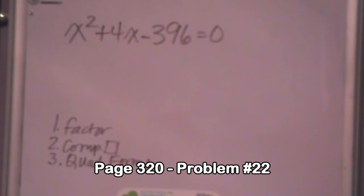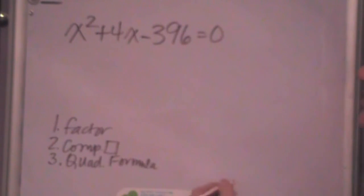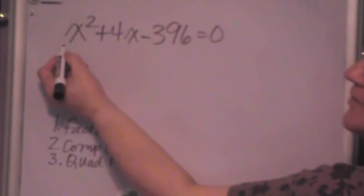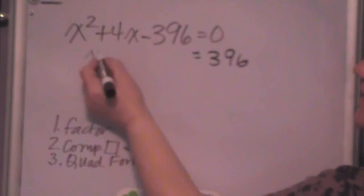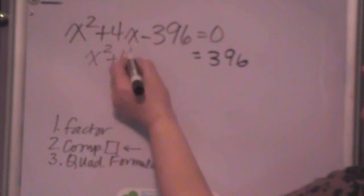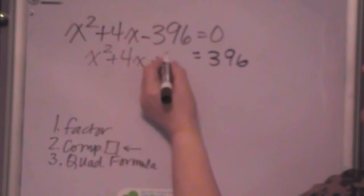On this quadratic, I would choose completing the square, because let's say I don't recognize any factors of 396 that are going to give me that 4 middle term. So, what I'm going to do is I'm going to do completing the square, and I'm going to get rid of my constant term. My coefficient of x squared is 1, which is exactly what I want. So, if I put the 396 on the right side, and I leave that space, I can take half of the 4, and that's 2, square it, and I get 4, and add 4.